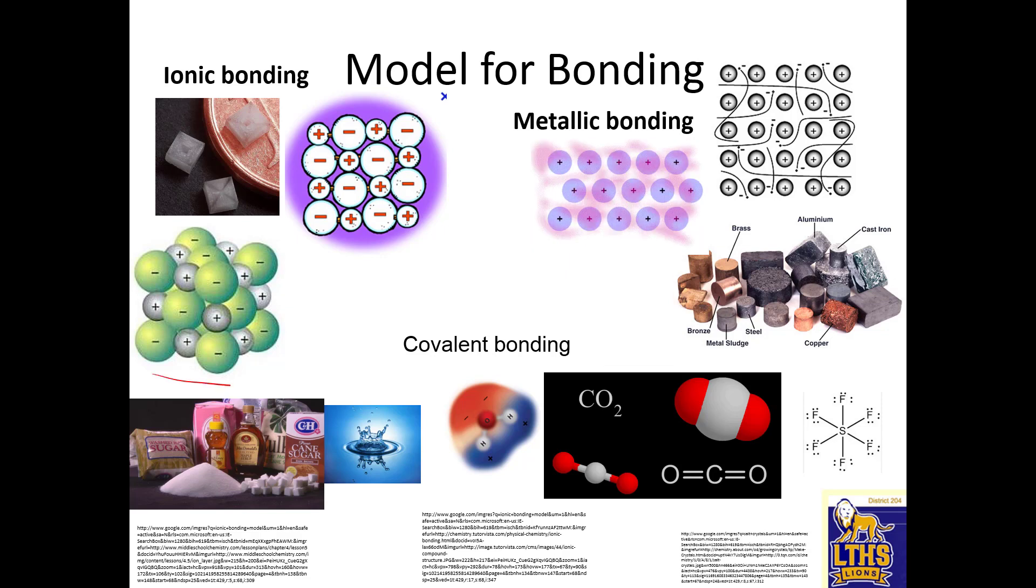Another thing to look at is the model. Here's what it looks like if we talk about ionic bonding. There's your crystals, the crystal lattice because of the cations and the anions lining up in this crystal structure. Sea of electrons. Covalent bonding can make big molecules like sugar, little molecules like water and carbon dioxide, bigger molecules like sulfur hexafluoride. Sharing electrons.